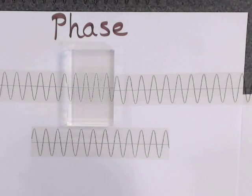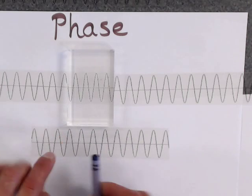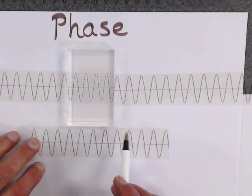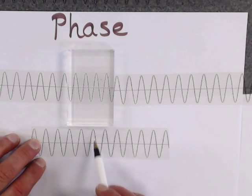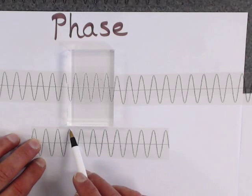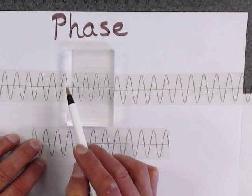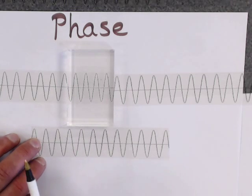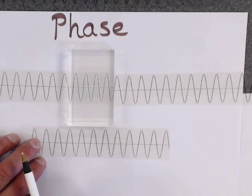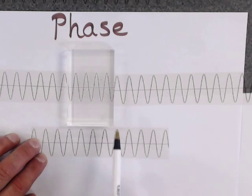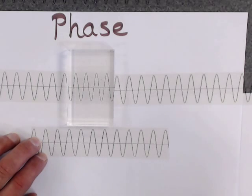The difference in phase would be the number of wavelengths here. So what do we got? We got one, two, three and three quarters. And here's one, two, three, four and a half. So you've got about a half wavelength change there. Yeah, so we've got a full half wavelength change here.